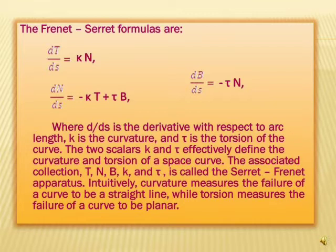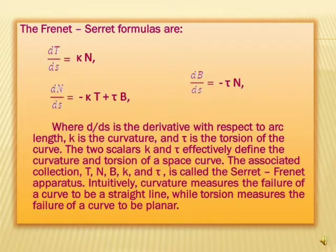The two scalars κ and τ effectively define the curvature and torsion of a space curve. The associated collection t, n, b, κ, and τ is called the Serret-Frenet apparatus. Intuitively, curvature measures the failure of a curve to be a straight line, while torsion measures the failure of a curve to be planar.